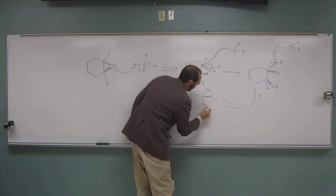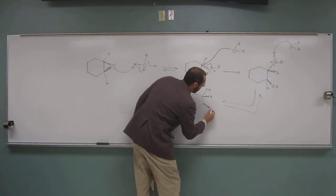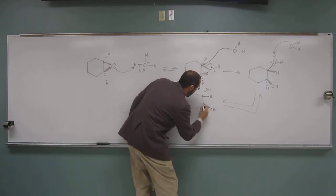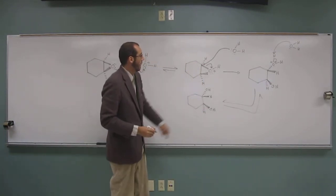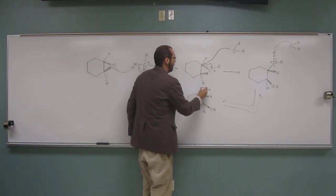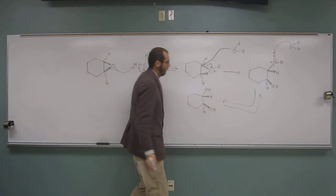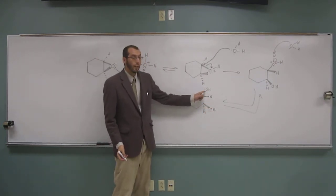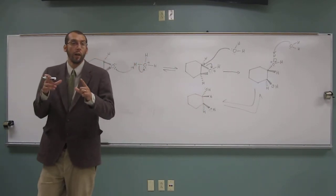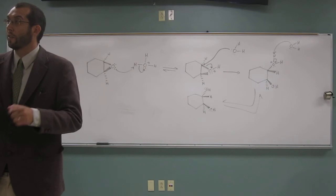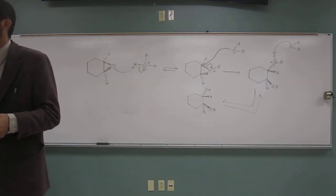So from that reaction conditions, I can get that trans-dial. Do you guys see that they're on opposite sides of the ring there? So remember with osmium tetroxide, you can get the cis-dial from the alkene, or potassium permanganate.